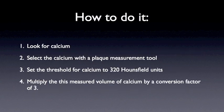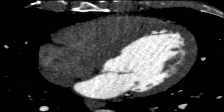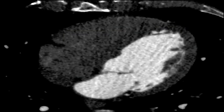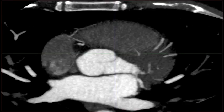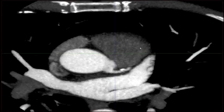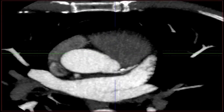Firstly, find the calcium. The best thing to do is to reduce the window level and increase the window width a bit, increase the MIP, and carefully scroll through and look for calcium. In this case, we can clearly see some calcium in the proximal LAD and there's no calcium elsewhere.